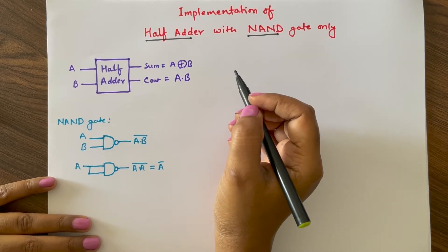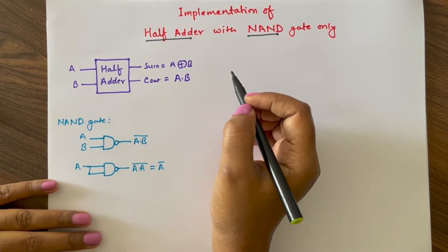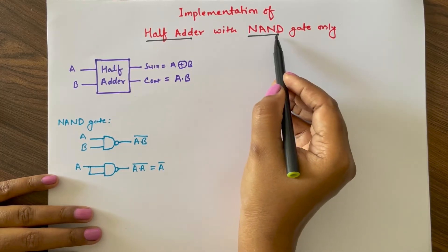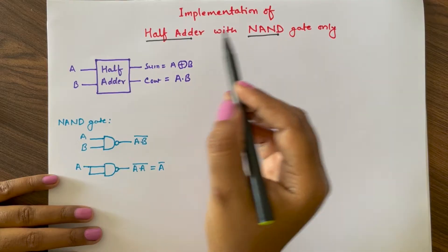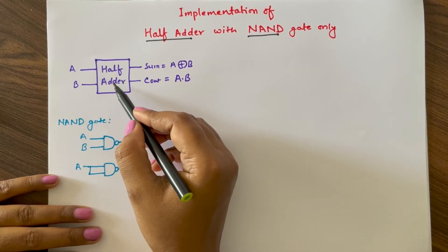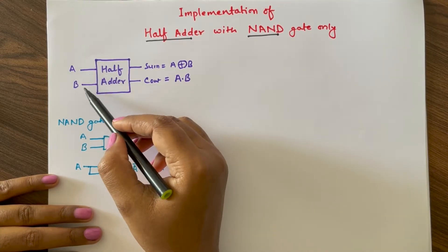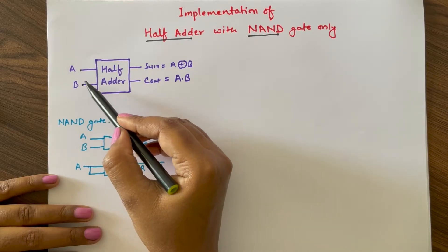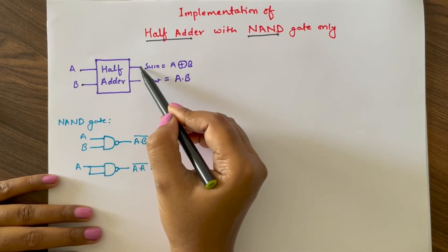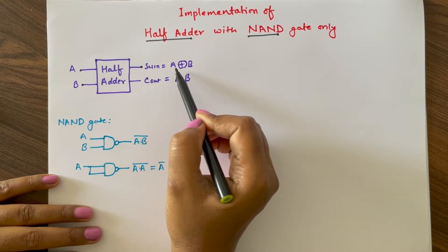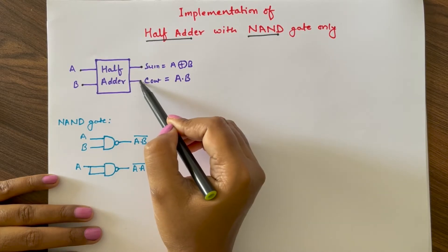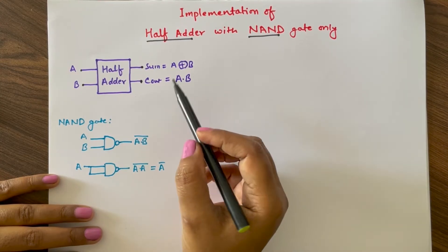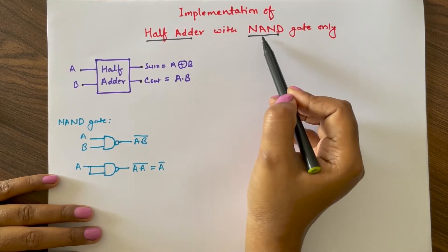Hello friends, welcome to our YouTube channel RF Design Basics. In today's lecture we are going to study about how to design a half adder with NAND gates only. A half adder is a combinational circuit that adds two one-bit numbers. Suppose these two one-bit numbers are A and B, then the output of this half adder will be sum as A XOR B and carry as A dot B.